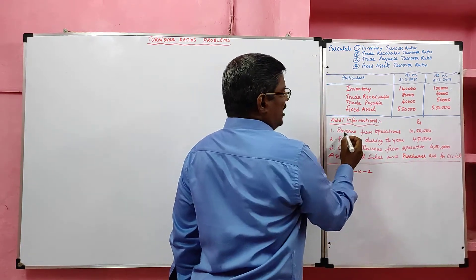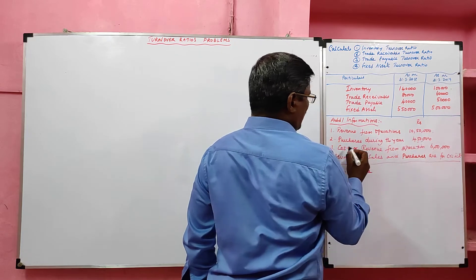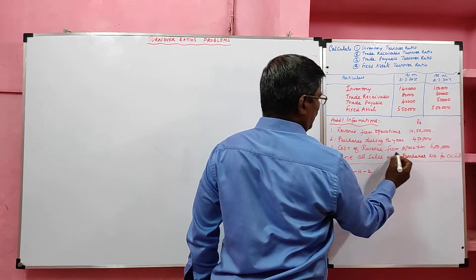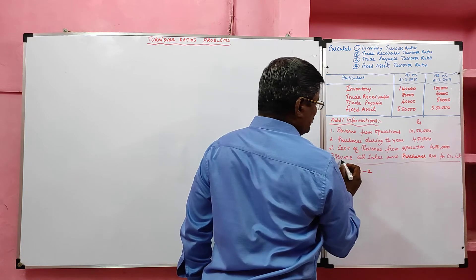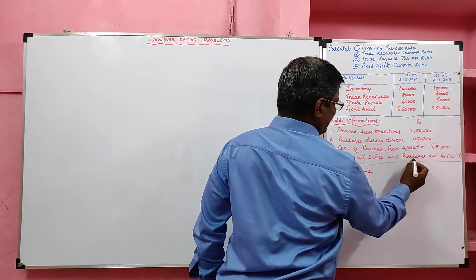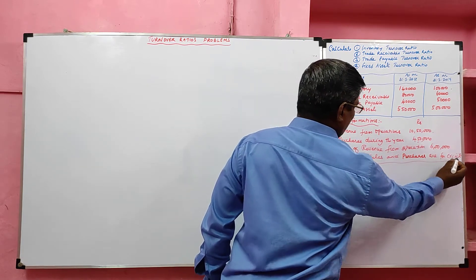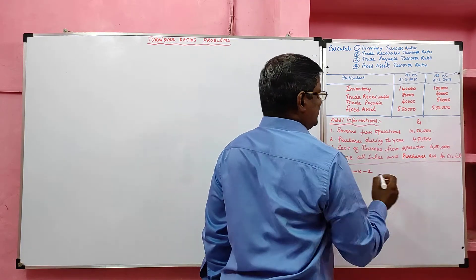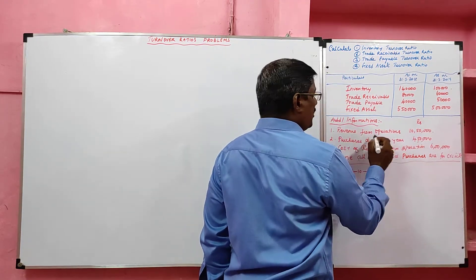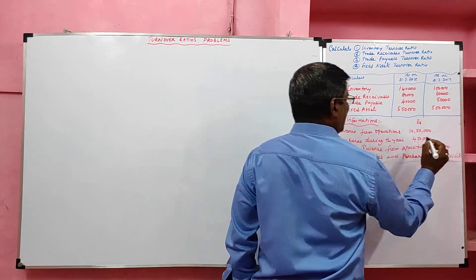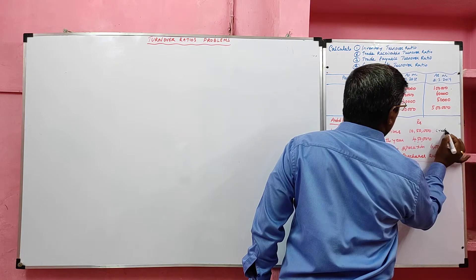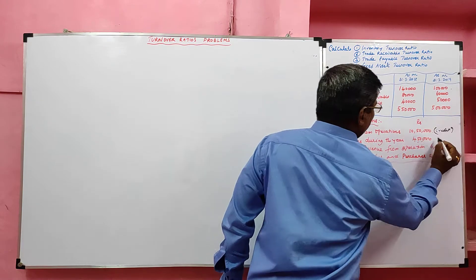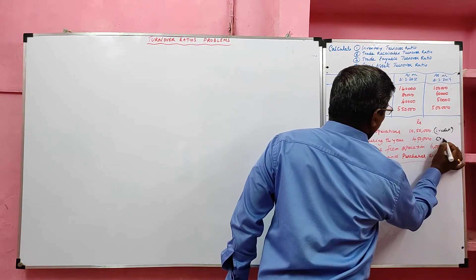Additional information: revenue from operation 10,50,000; purchases during the year 4,50,000; cost of revenue from operation 6,00,000. Assume all sales and purchases are for credit. Revenue from operation means sales, so we treat the total revenue from operation as credit sales, and purchases are also assumed as credit.